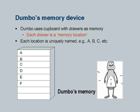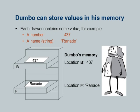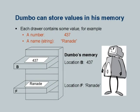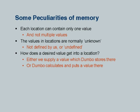A happy Dumbo is shown because now, because of these drawers, he can remember something. Each drawer contains some value — for example, it could contain a number or a string. We show that location B contains 437 and location F contains a string. This tells students that values can be numerical or string. An association between the memory location and the value is established, and implicitly we say only one value can be stored — each drawer contains a single value, for example a number or a name. A location can contain only one value, not multiple values. Values in locations are normally unknown until defined by us — we call them undefined.